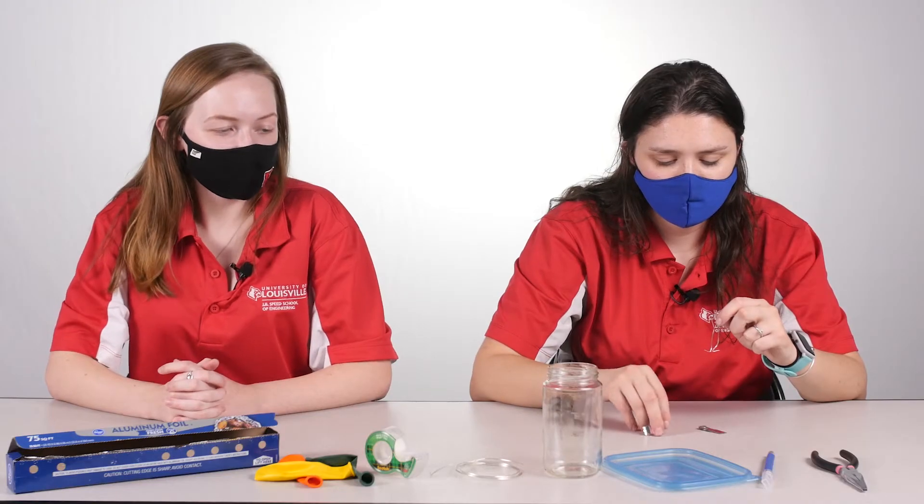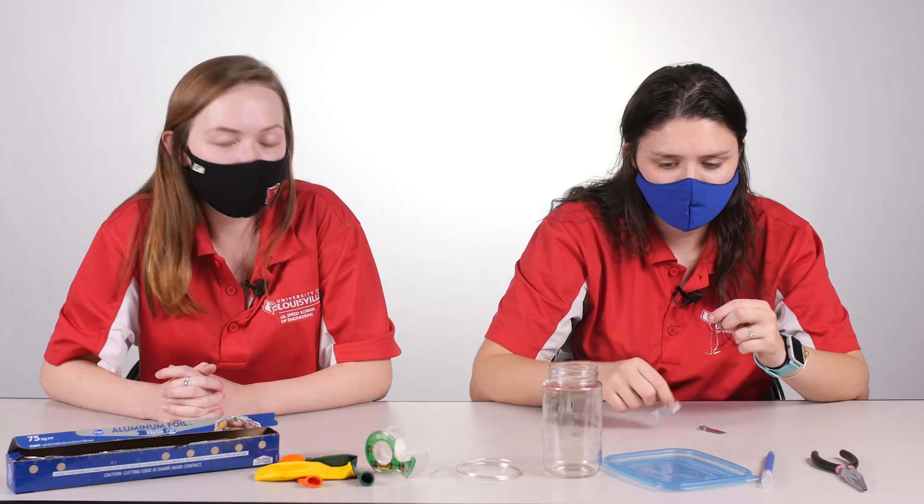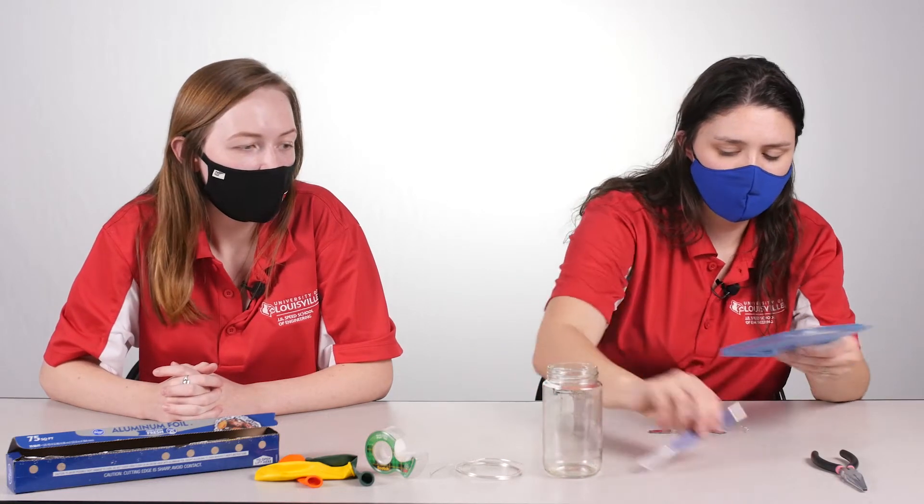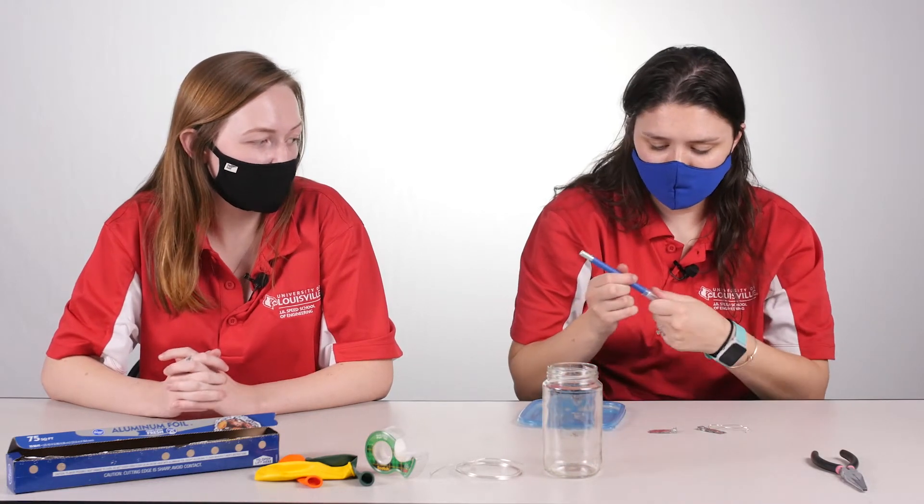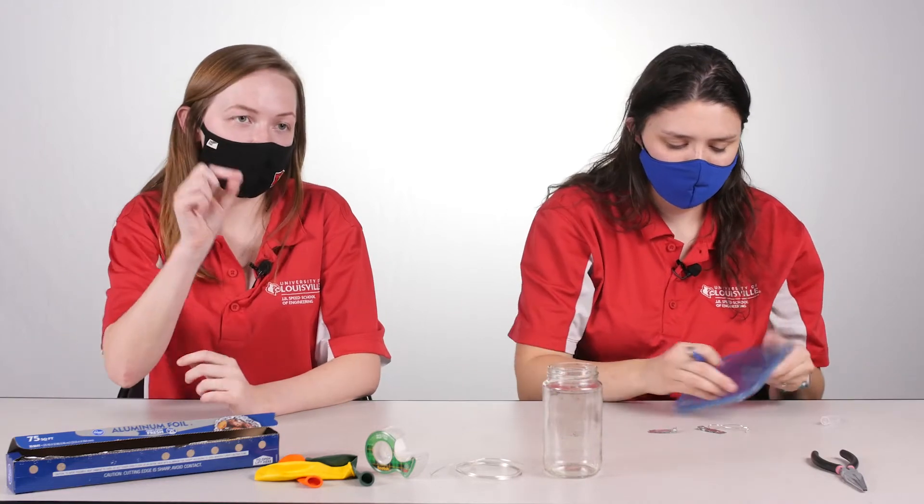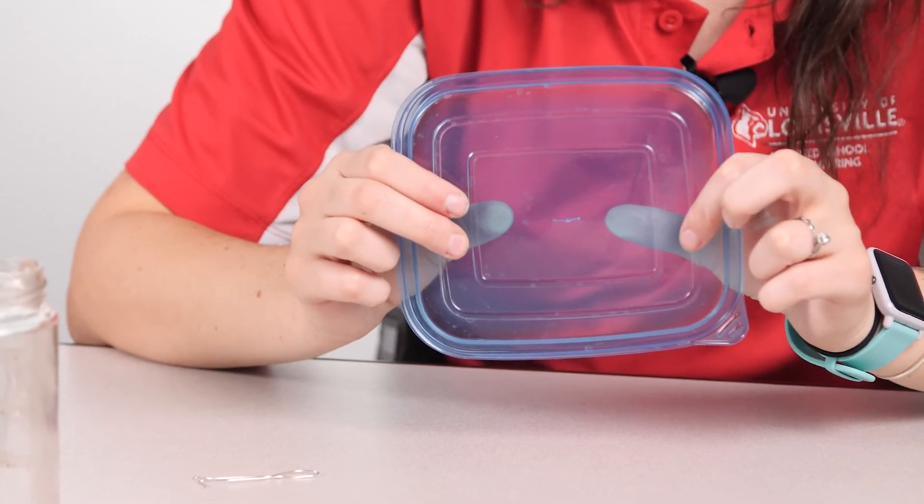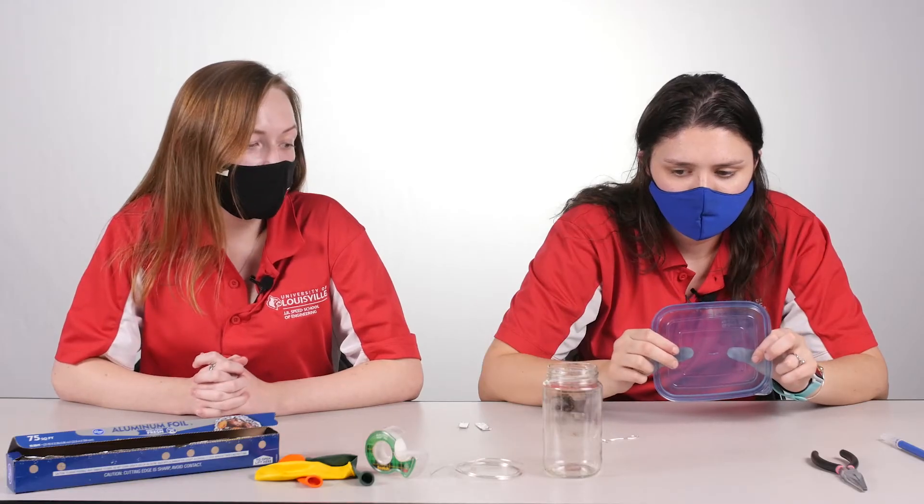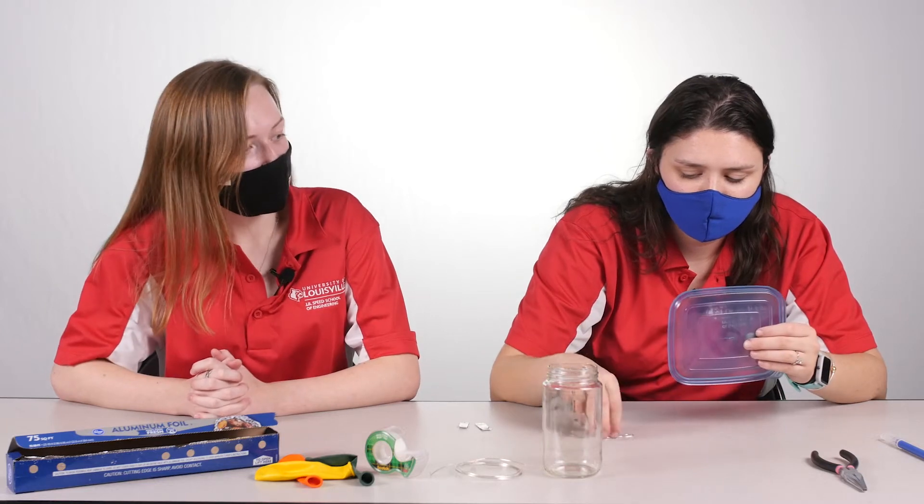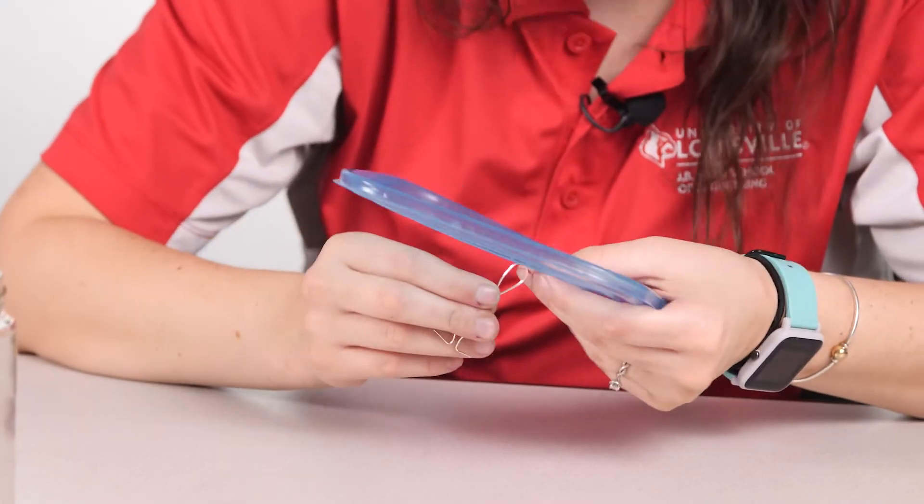Next, we're going to be using the plastic lid. Any Tupperware lid will work and we're going to be using the exacto knife. Ask your parents to cut a little slit right down the middle. The purpose of cutting the slit in the top of the lid is to be able to put our homemade hook through the top of the lid so that it hangs down.